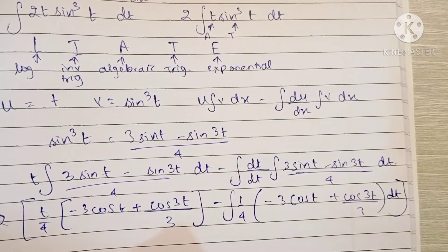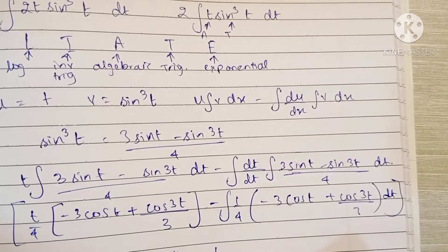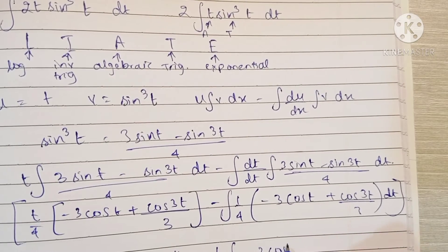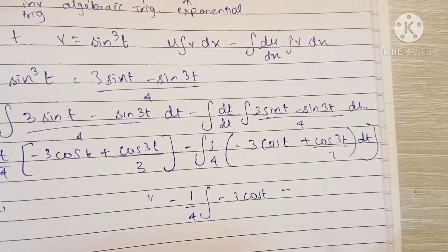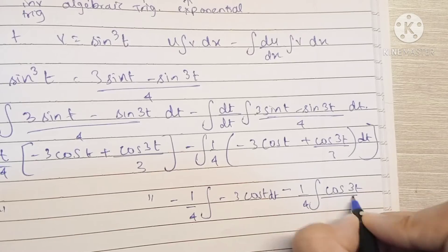So this looks the same right here, I'm not writing it again. This is minus 4, minus 1 by 4. And now we have two integrals: this is minus 3 cos t minus again dt, minus 1 by 4 integration of cos 3t by 3.